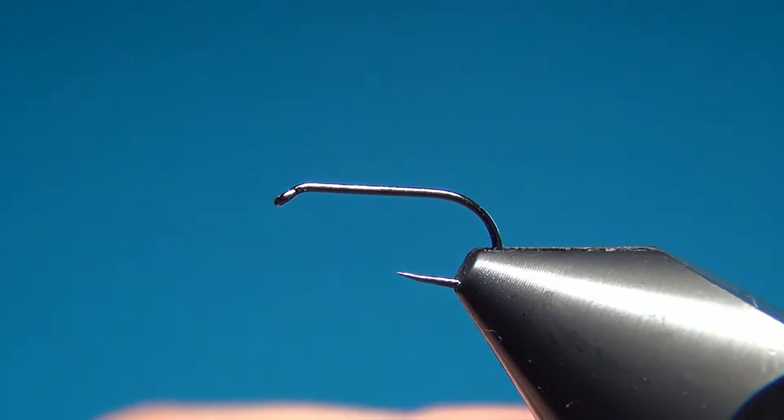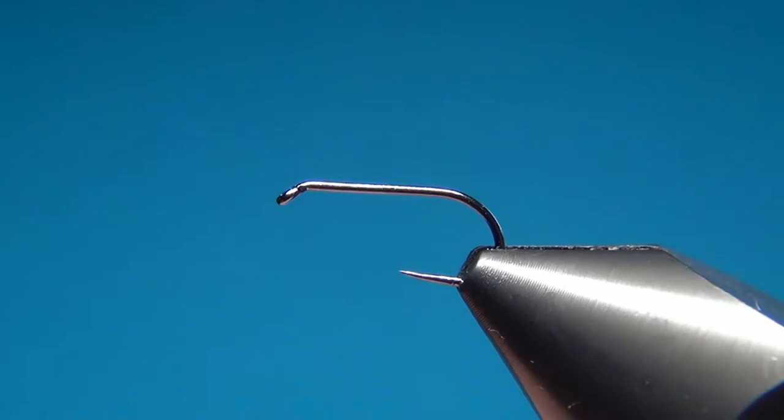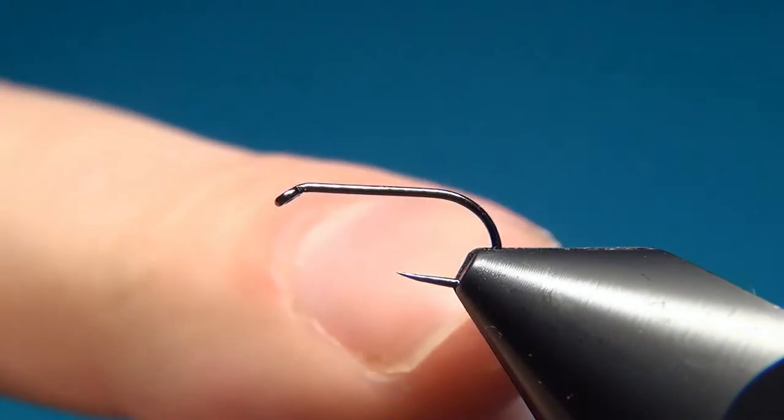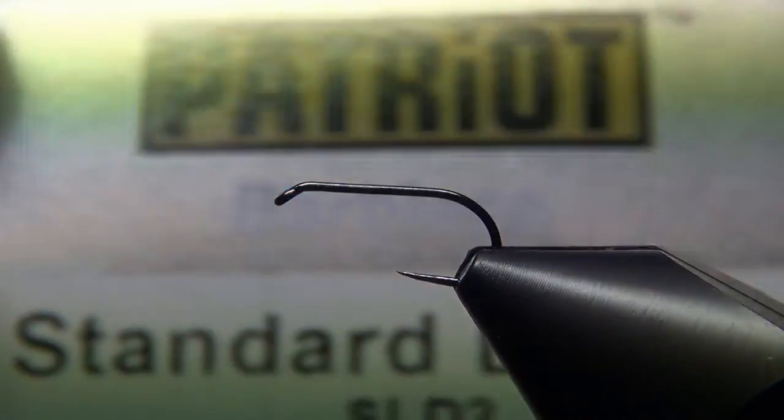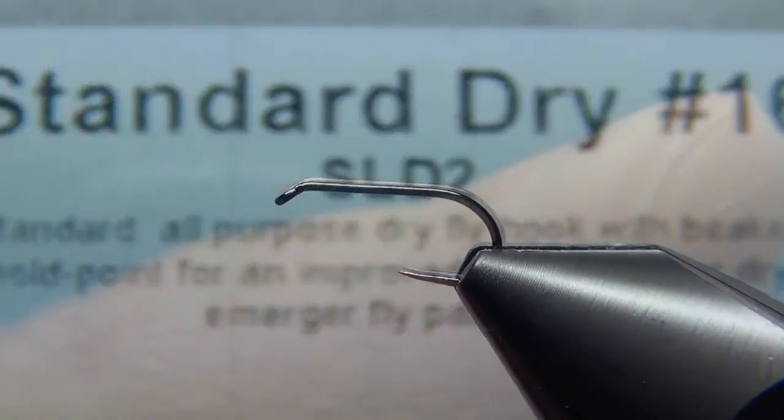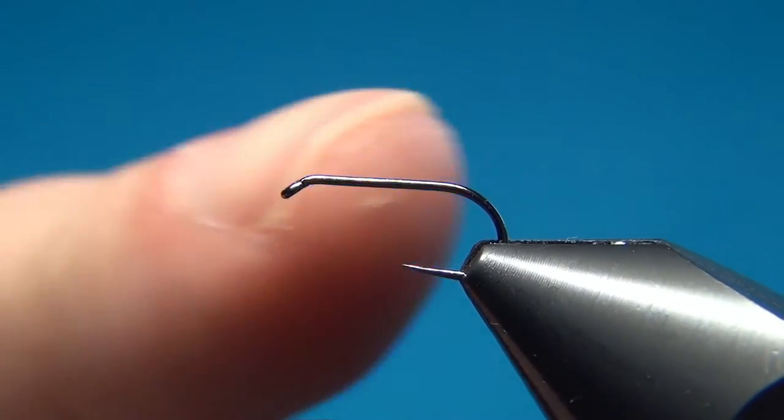This one is kind of a generic pattern for all kinds of small insects that would float right in the surface. Here in the vise I have a Partridge Standard Dry size 16, and this is a nice light hook to use for this pattern.